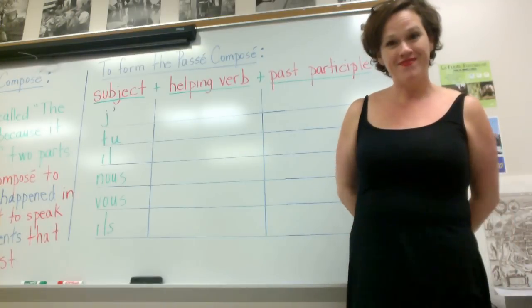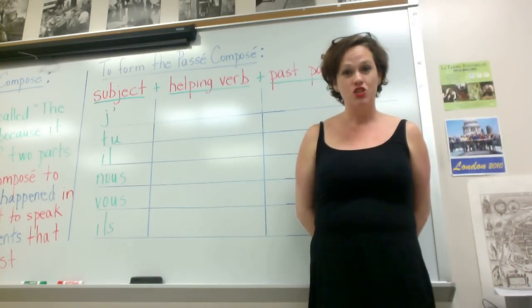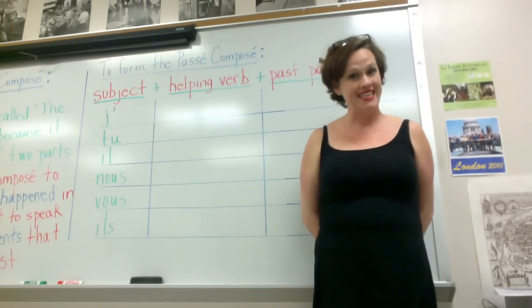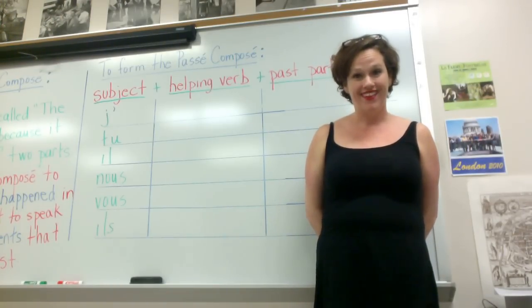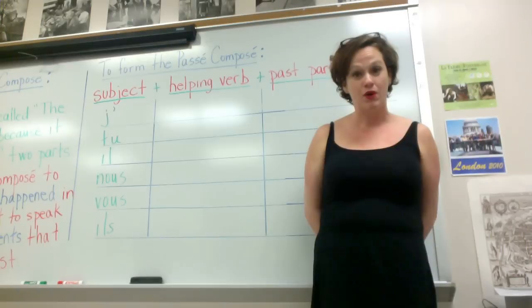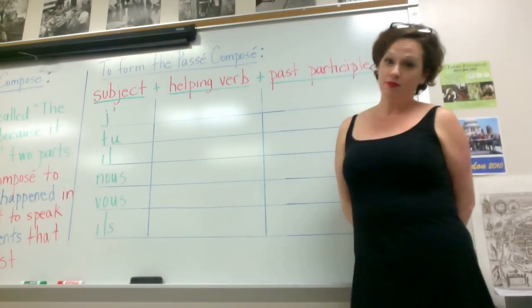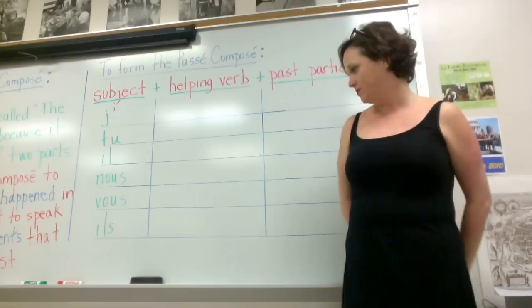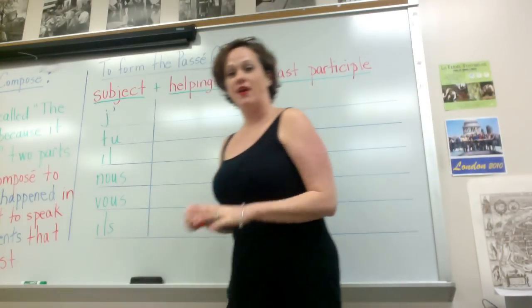Can you say it with me? J'ai, tu as, il a, nous avons, vous avez, ils ont. Alright, so we've got that much. Now remember, that's the helping verb, and sometimes teachers and other people refer to it as the auxiliary verb.